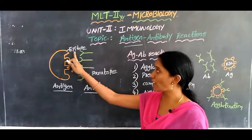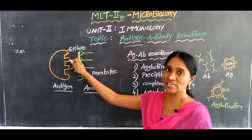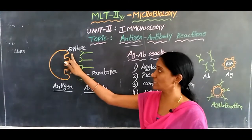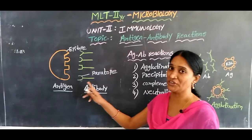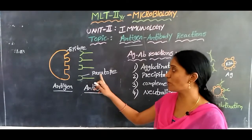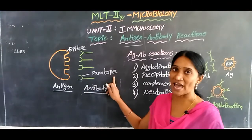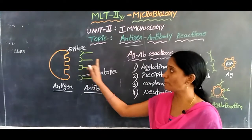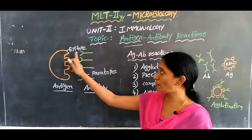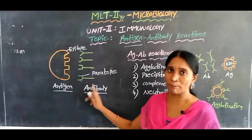The antigenic part is known as the epitope. The antibody part is known as the paratope. They combine — the paratope combines with the epitope.